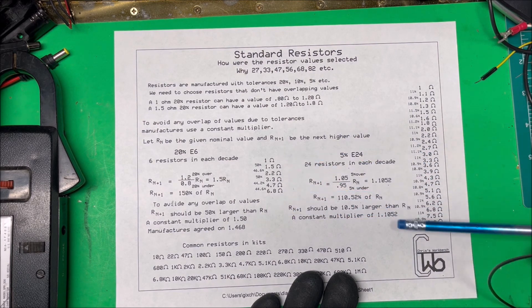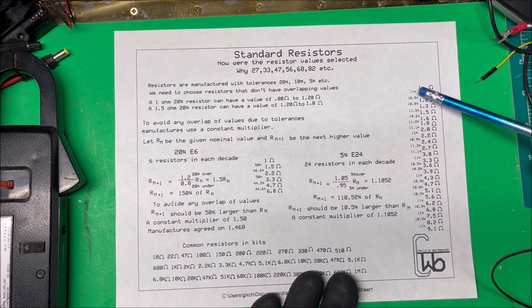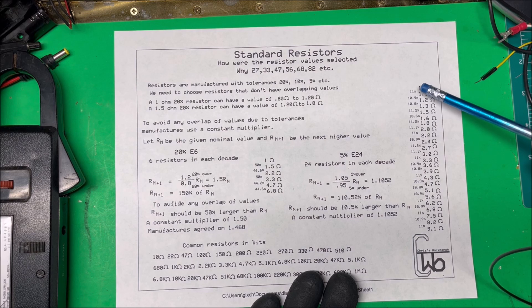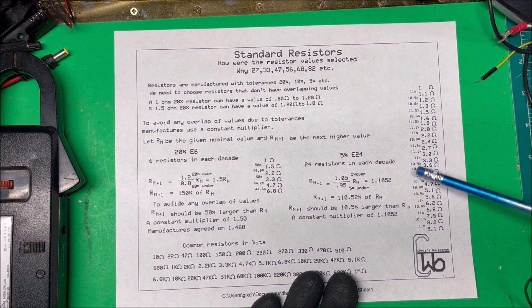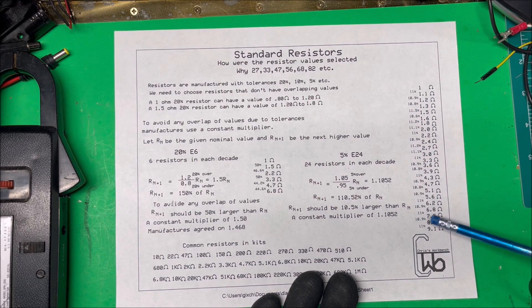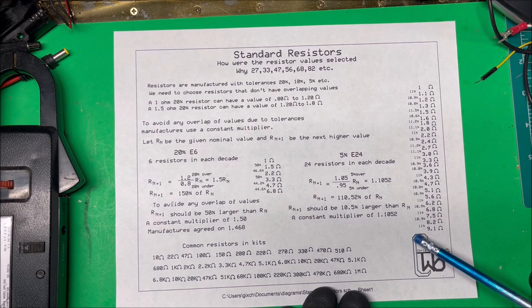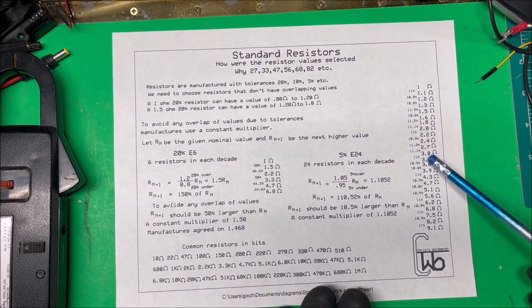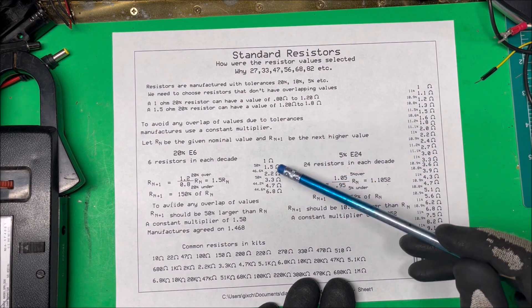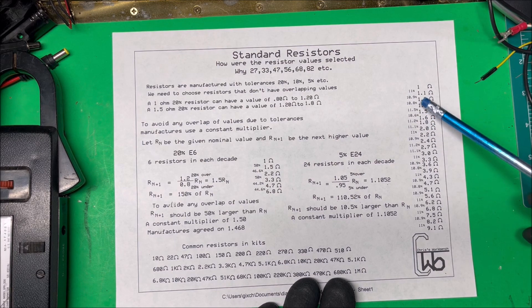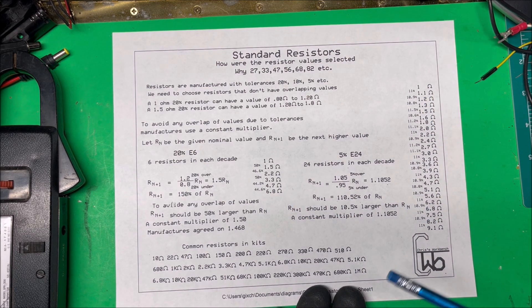I put down the multipliers here that they used - 1.1, 1.09, 1.06 - so they tweaked it around a little bit so that the values would always be the same. That's how we get these values - they come up with a multiplier but then they tweak them so that the 20 percent, the 10 percent, and the five percent values are all the same numbers.